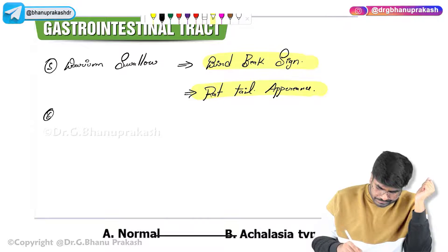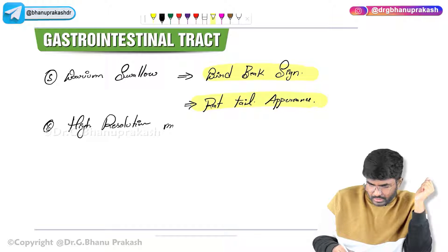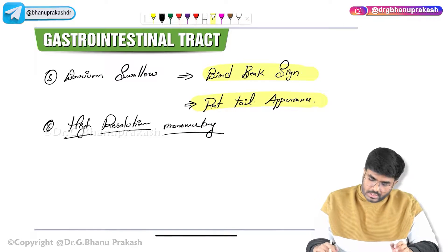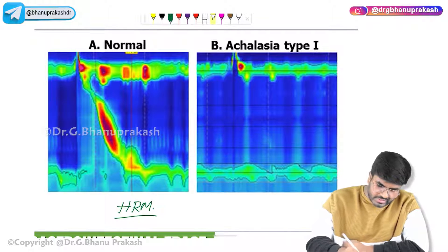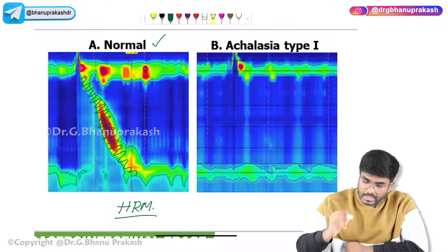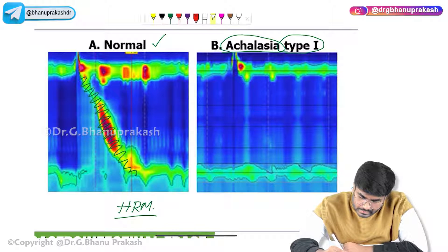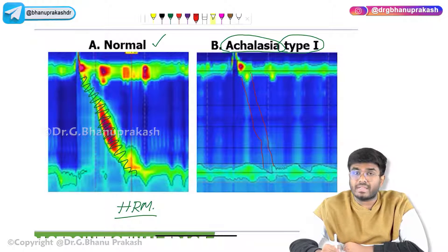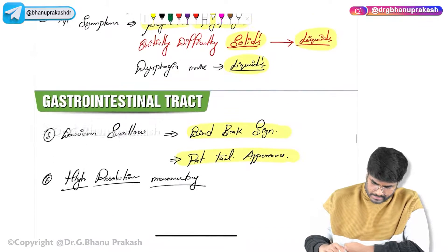When you perform high resolution esophageal manometry (HRM), that is going to be the best investigation — almost considered the gold standard. In a normal individual on high resolution manometry, you can see contractions in the esophagus when food is taken. But in Achalasia Cardia, the high resolution esophageal manometry shows no contractions — the contractions are not being recorded. So high resolution manometry is almost considered the gold standard for diagnosis.